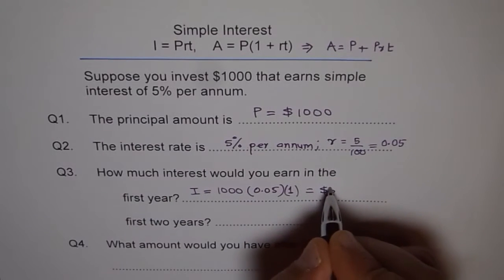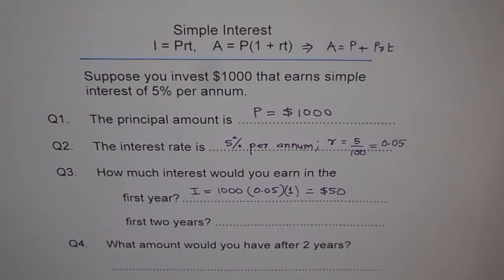So we get $50. So first year, the interest earned is $50 on investment of $1000 at 5% per annum.